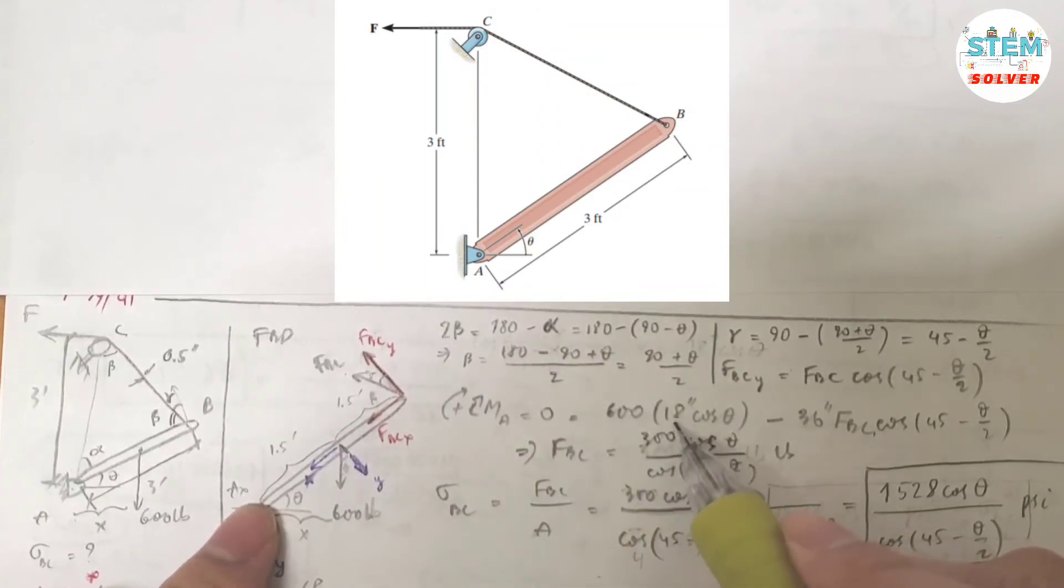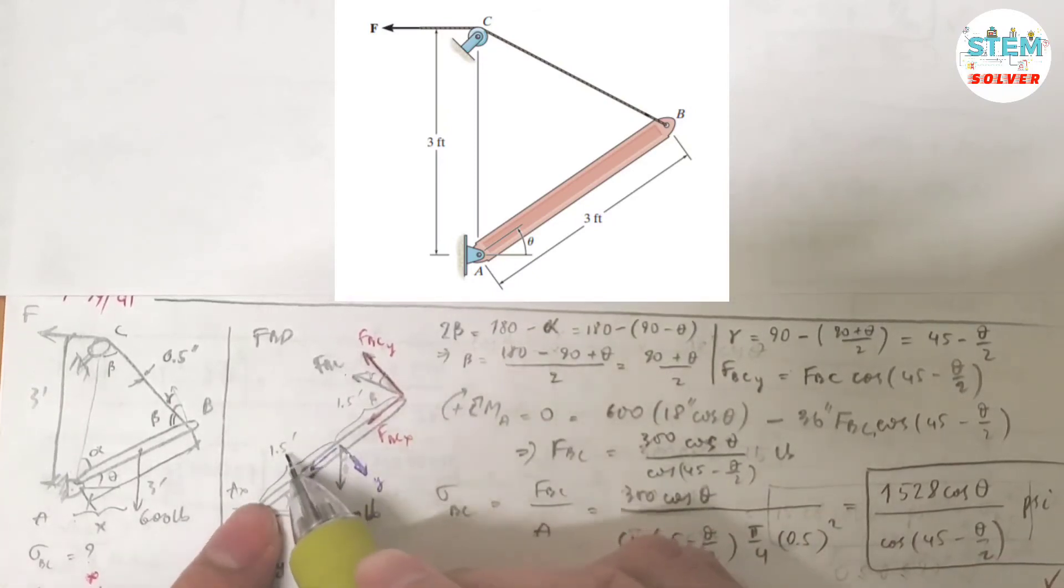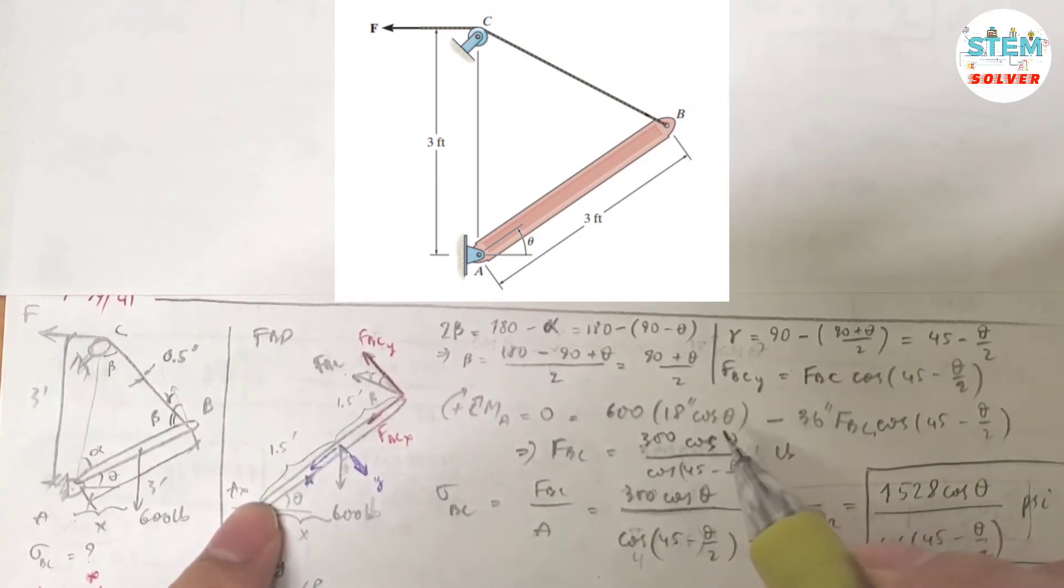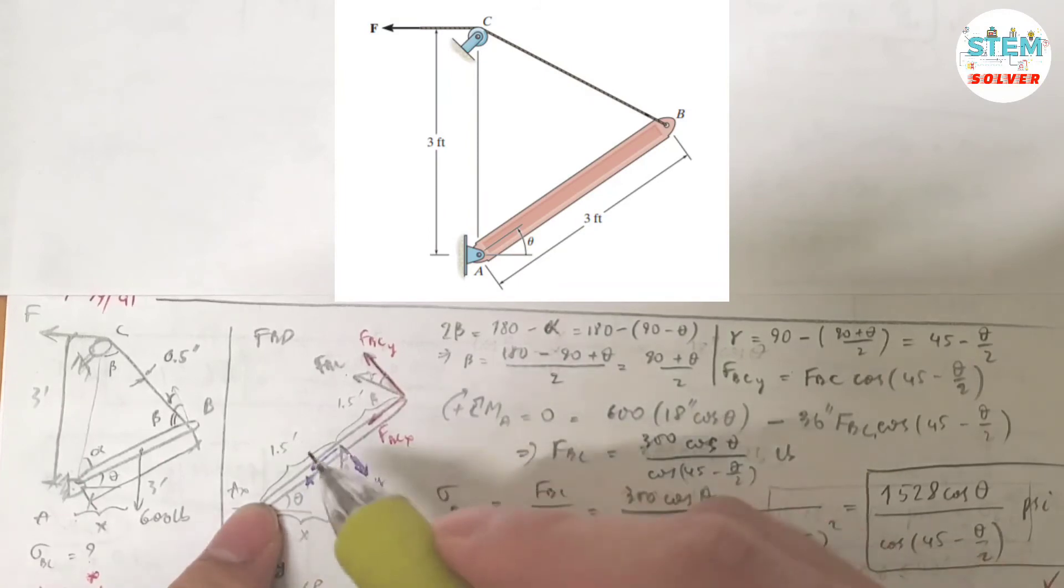So I have 600 times cosine of theta. And what is the distance? The distance from here to here is 1.5 feet times 12, which is 18 inches. And then you have... I assume clockwise is positive. So I have positive moment for this one.